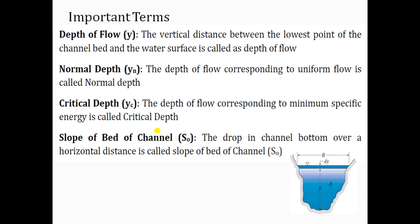The first term is depth of flow. The vertical distance between the lowest point of the channel bed and the water surface is called the depth of flow. Considering a section of a natural channel, the vertical distance between the lowest point of the channel bed and the water surface is the depth of flow, denoted as Y.